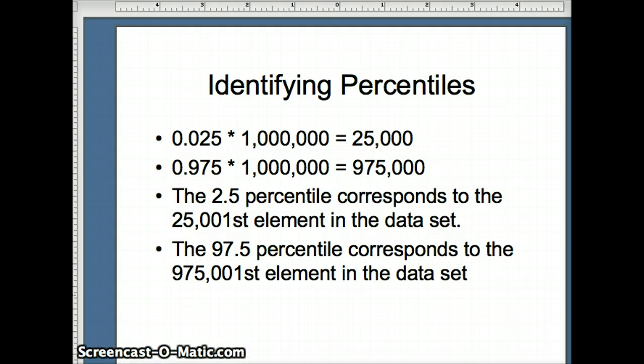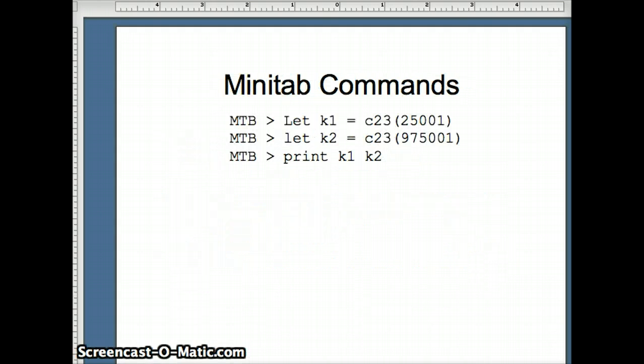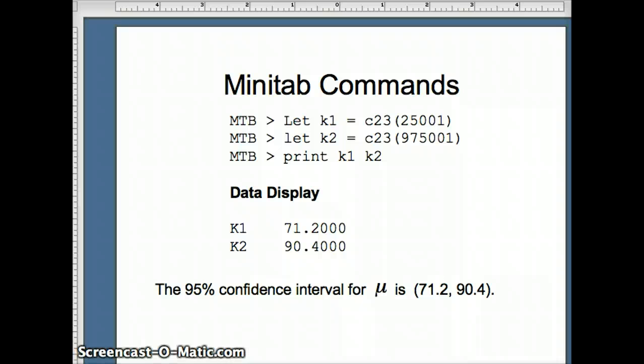So looking for those percentiles, we're going to go through our list. So our command is going to be to let K1 equal C23, our sorted means, number 25,001. And for the second one, we're going to say let K2 equal C23, number 975,001. And you'll see what the results of that are going to be. So the 2.5 percentile was 71.2, the 97.5 percentile, 90.4. So 95% of the means fall between 71.2 and 90.4. So we can conclude that the 95% confidence interval for mu is from 71.2 to 90.4.